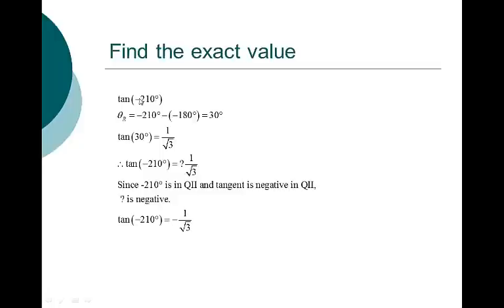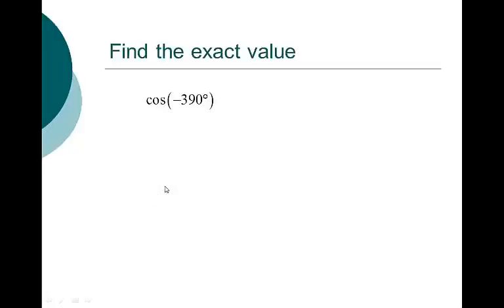We could have taken the negative out front, found the tangent of 210 — which is 1 over the square root of 3 — and then applied the negative later. We still would have gotten this. So if you want to factor the negative out, you're more than welcome to, just don't forget it's there.